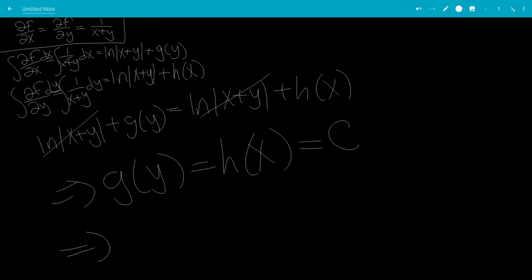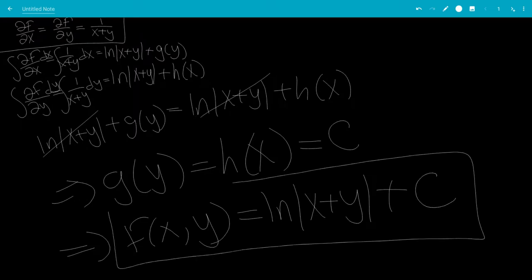So what this means is that f of x, y is the integral of these, so this would be ln absolute value of x plus y. And we know both of these are just constants, so we have plus C. And that is the end of the video.